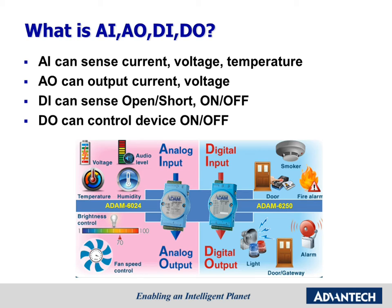There are AI and AO channels on ADEM-6024. AI can sense current, voltage, and temperature from sensors. AO can output current or voltage to control end devices. On the right side of the picture, ADEM-6025 is a digital I/O module. There are DI and DO channels on ADEM-6025. DI can sense open and short signals, or on/off signals. DO can control a device's on/off status.